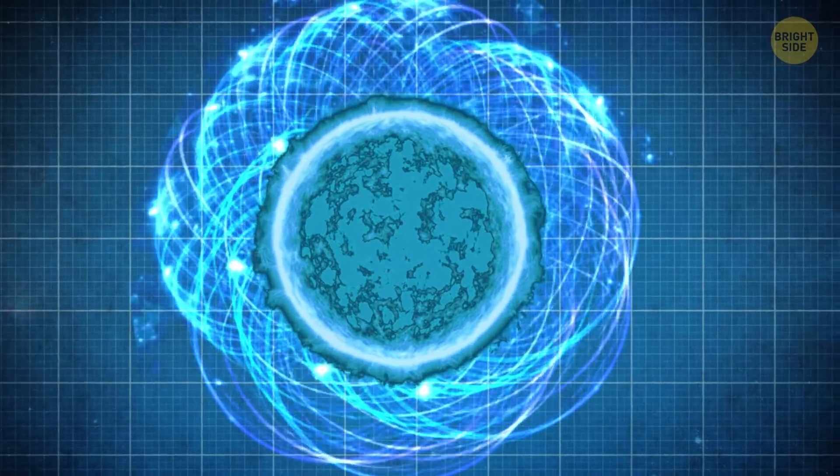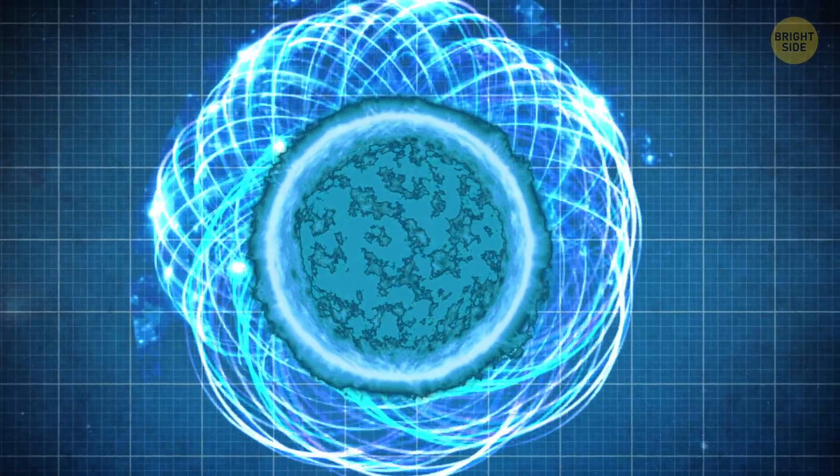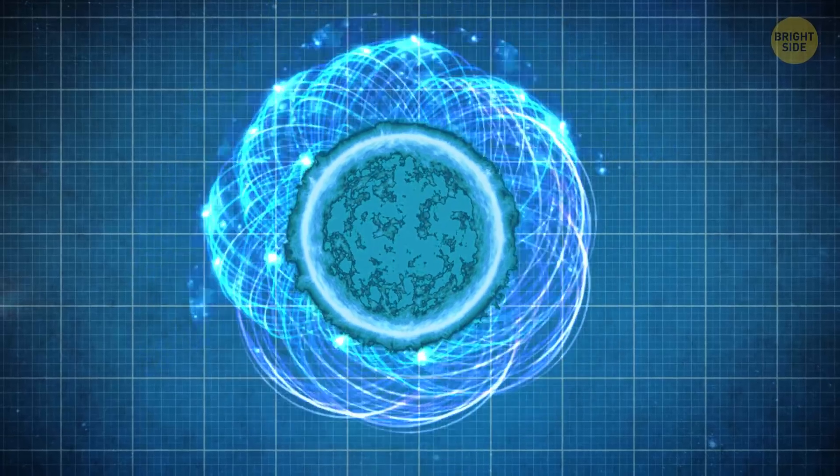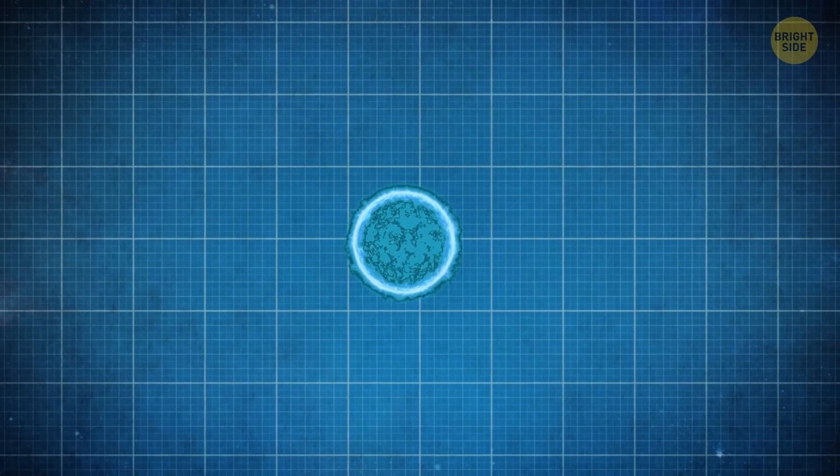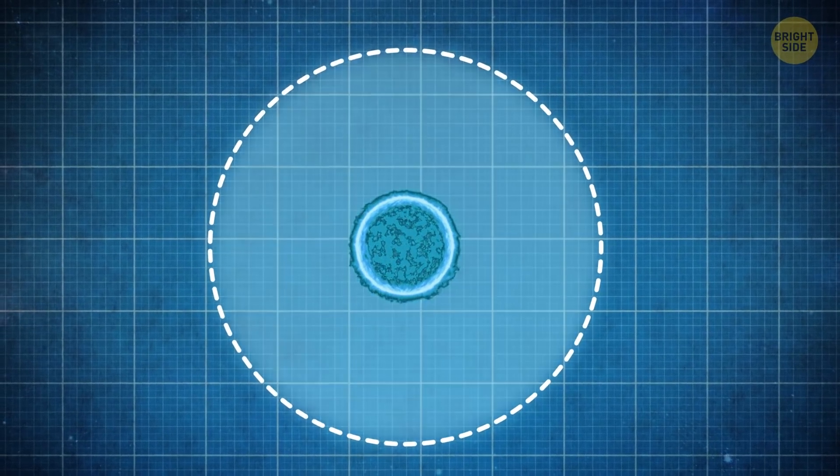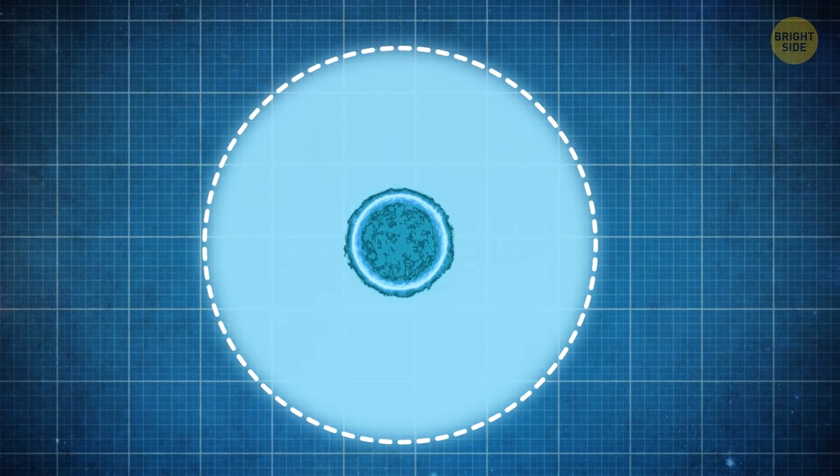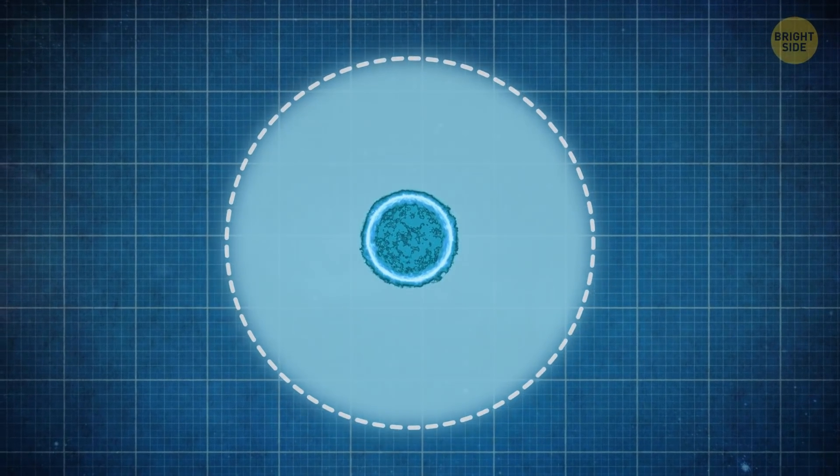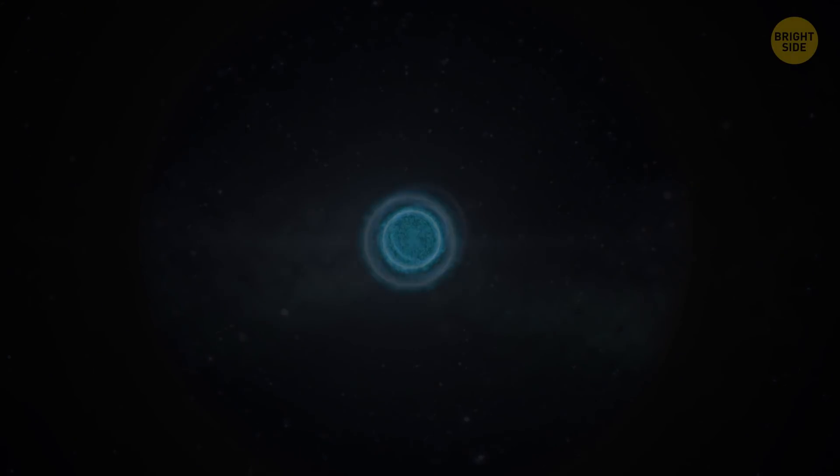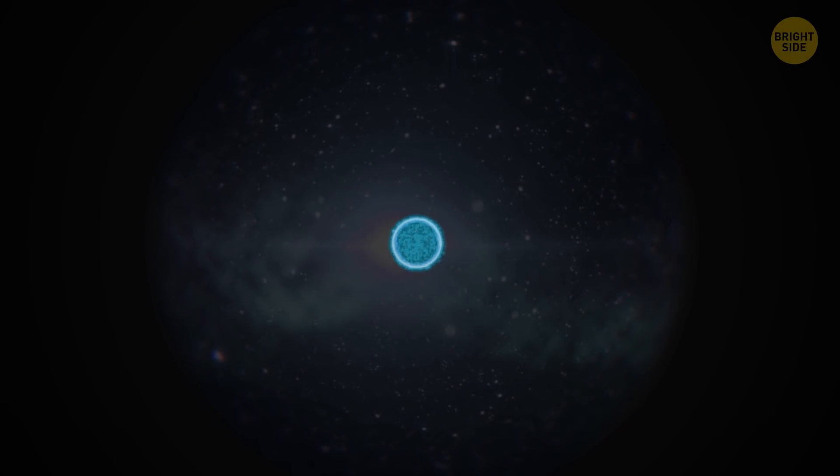Now, I've already mentioned that neutron stars have incredibly powerful gravitational fields. This is why the light coming from one often doesn't manage to escape and gets stuck in an orbit around the star. And in this case, you can see the entire star's surface only when you observe it from one particular point.